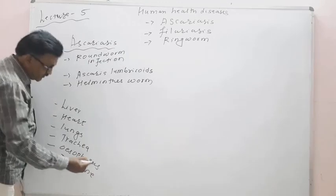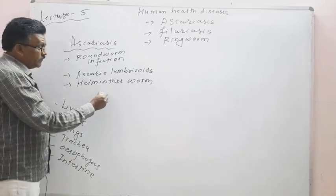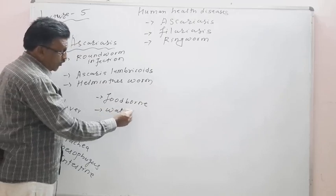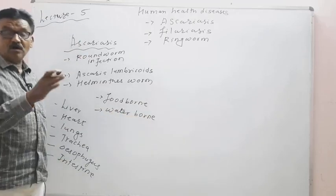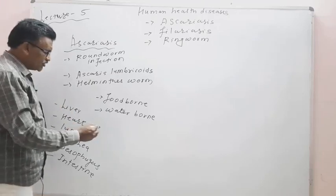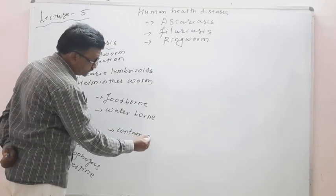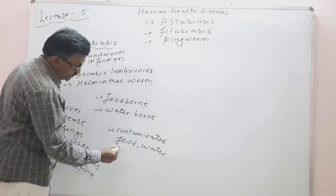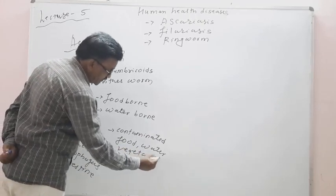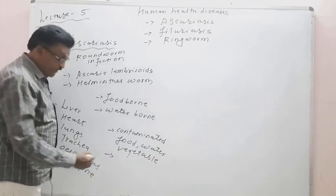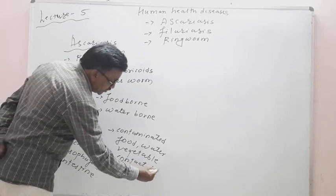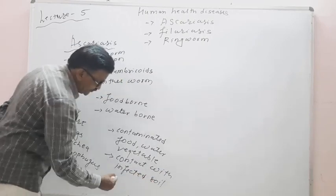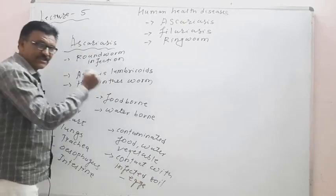Ascariasis is a foodborne and waterborne disease. Infection takes place through contaminated food, water, vegetables, or contact with infected soil.